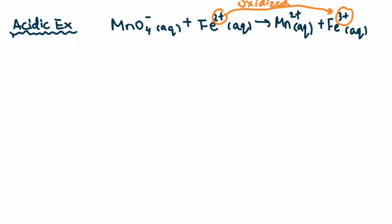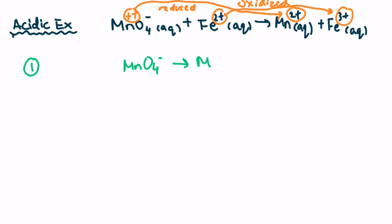Let's look at the manganese next. We have an overall charge of negative one on MnO4⁻. Oxygen brings a 2− charge times 4, which is negative 8. That means that manganese has to have a +7 charge for the entire compound to have a −1 charge. And on the right side, manganese has a 2+ charge. So what happened from +7 to +2? It actually gained electrons, so it is being reduced. So we know manganese is reduced and iron is being oxidized. Now we can write our two equations. Our first equation is the reduction reaction: MnO4⁻ became Mn2+. And our second equation is the oxidation reaction, where Fe2+ became Fe3+.